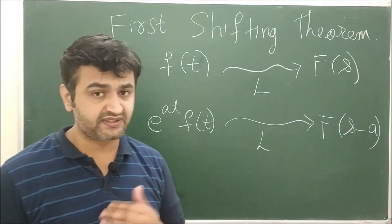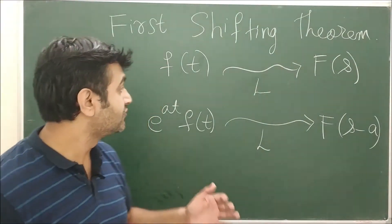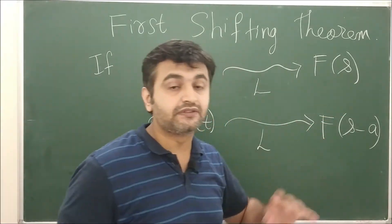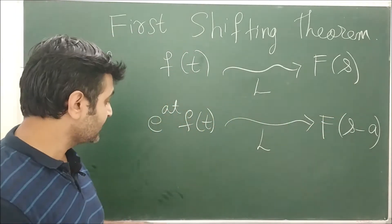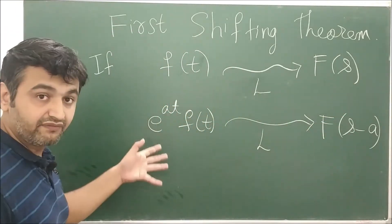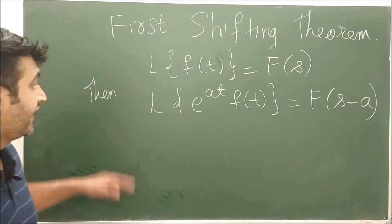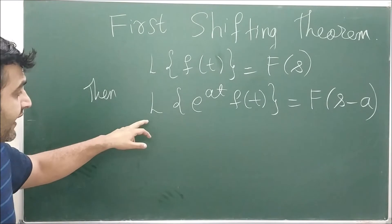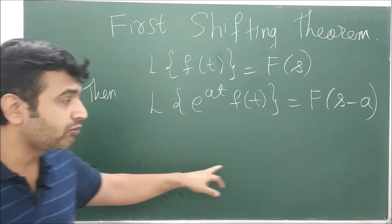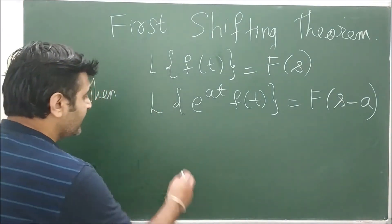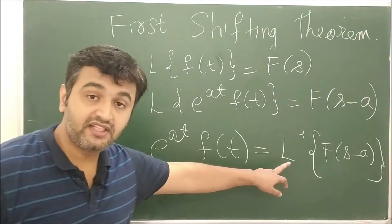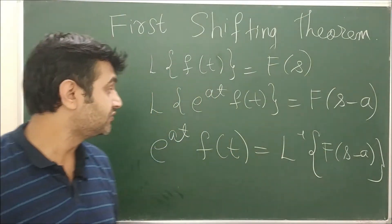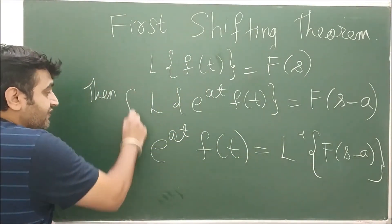Actually there are two shifting theorems — first and second. We are shifting s by a units, that's why it's called the first shifting theorem. Another way of writing this, which you see in most books, is the preferable form. You can also talk about the inverse: e^(at) · f(t) is nothing but the Laplace inverse of F(s − a).